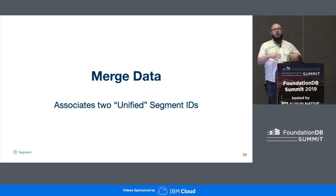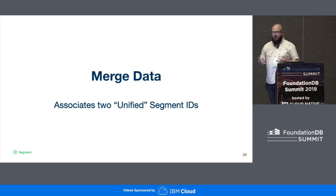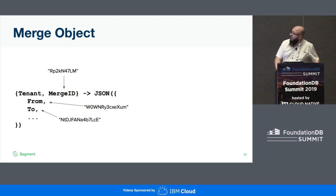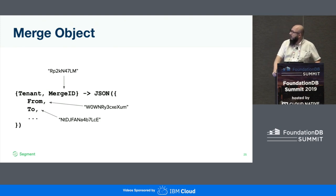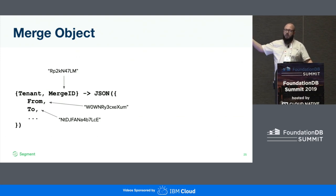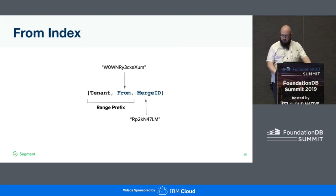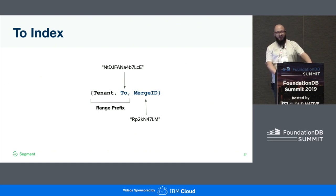Merge data is what we create when we finally realize there are multiple mappings that connect to the same ID and we need to bring them together. We create what's called a merge entry, and those associate to unified segment IDs. A merge object looks similar to a mapping: it's a tenant prefix with a generated surrogate merge ID. It has some timestamps and other fields, but the key thing is it represents a graph relationship — a from and a to — and these are segment IDs. We have a from index, which maps the from field to the merge ID, and a to index, the to field to the merge ID.